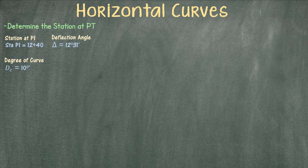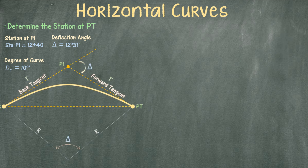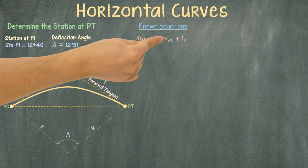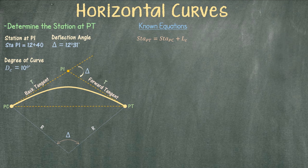I will bring up the horizontal curve diagram to better explain the process. First we should go over the known equations in order to see which ones can help us find the station at PT. Our first equation is station PT equals station PC plus the length of the curve.